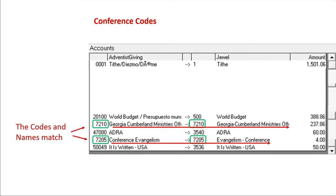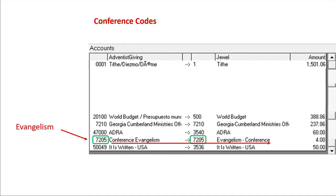Conference codes next — there are two of them, and both numbers and names match from left to right and are in the 7000 to 7999 range where they should be. Evangelism donations can be especially confusing, and I often see this account mapped incorrectly to local church evangelism. But the fact that it starts with 7 tells me that this is a conference offering, not a local one. For future reference, when a conference code beginning with 7 comes through, you can use that code as is — you don't have to look it up.